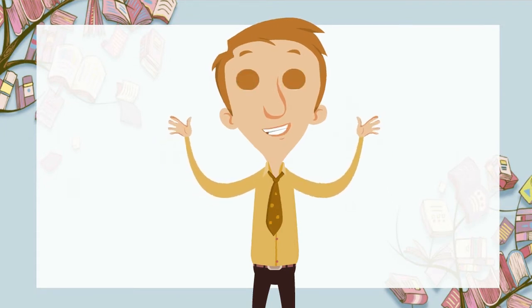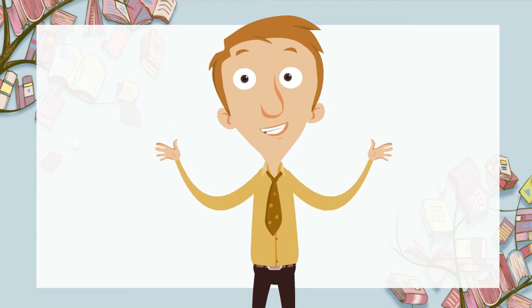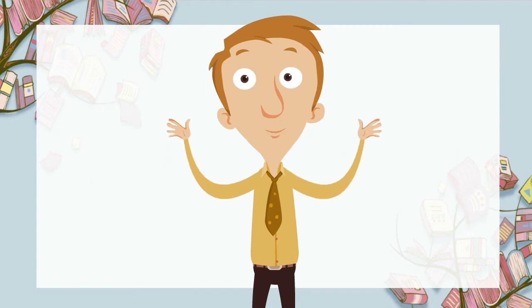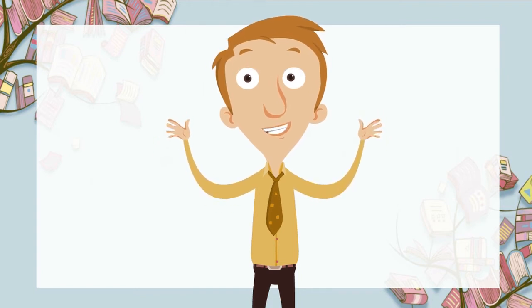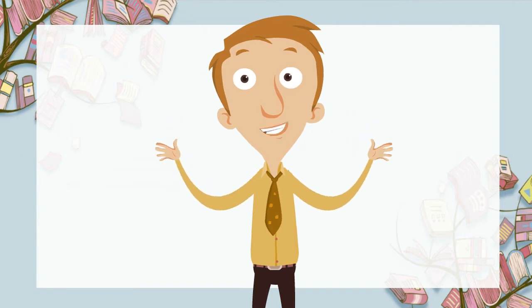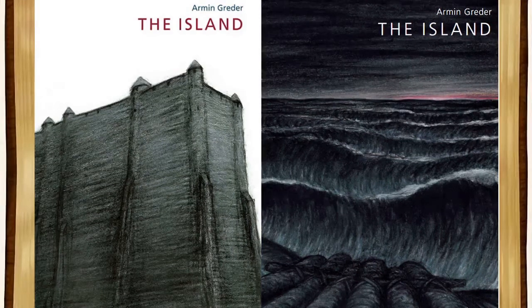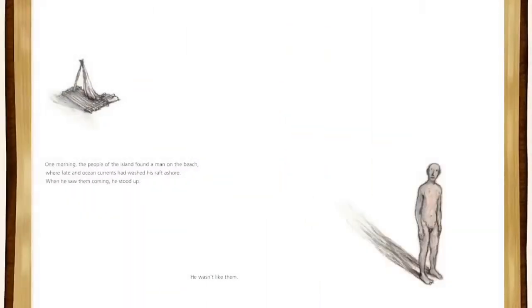Now that our OWI chart is complete, we're ready to jump into the story. So, without further ado, let's get into the book. The Island by Armin Greeder. One morning, the people of the island found a man on the beach, where fate and ocean currents had washed his raft ashore.